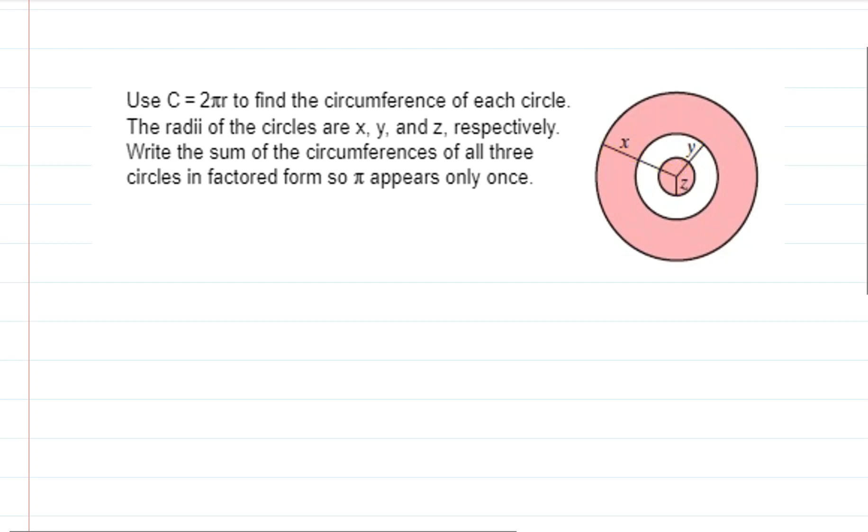So if you were given all of that information and you were also given the fact that the circumference is equal to 2πr, they could ask you a question such as: write the sum of the circumferences for all three of these circles and then do something else.